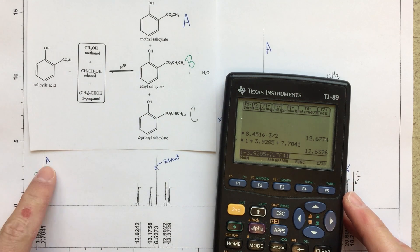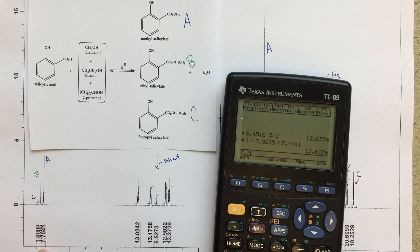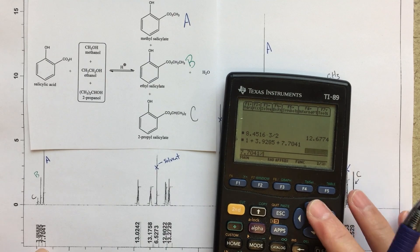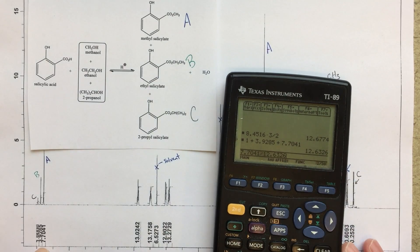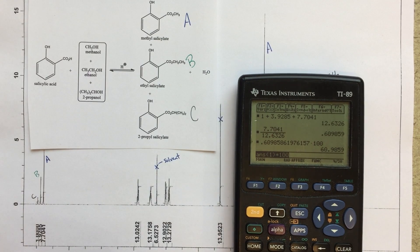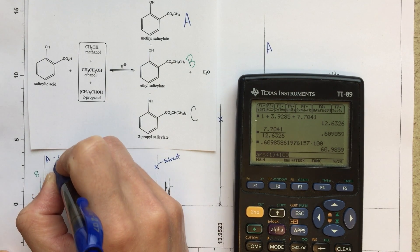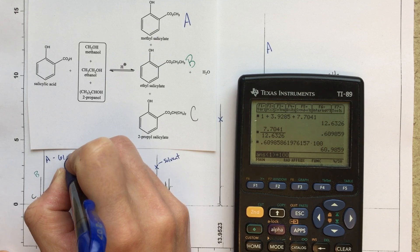So if I want to find the percent of A out of my total, I would take 7.7041 divided by that total, multiply that by 100, 60.98%, or we could say, I guess we could round that to 61%. So A, I would say is 61.0%.